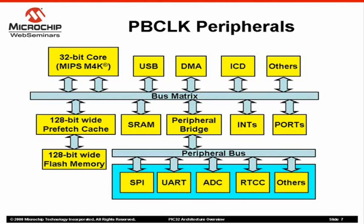Normally, PB Clock peripherals are slow in speed and do not require very high data throughput. When the PB Clock is running at 1-to-1 with SysClock, the CPU and other bus masters will be able to access PB Clock peripherals in one cycle. As PB Clock divider gets larger, a read of the PB Clock peripheral will take as many clocks as the divider value. For example, if the PB Clock is running at 1-to-8 of SysClock, it will take 8 SysClocks to read a PB Clock peripheral.